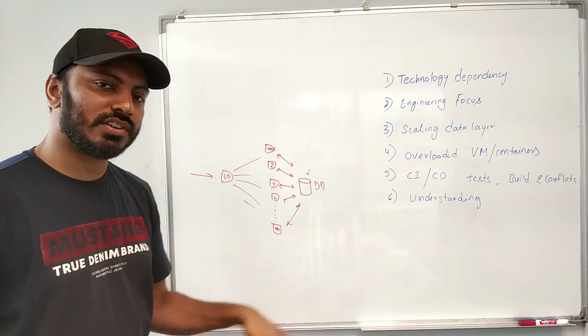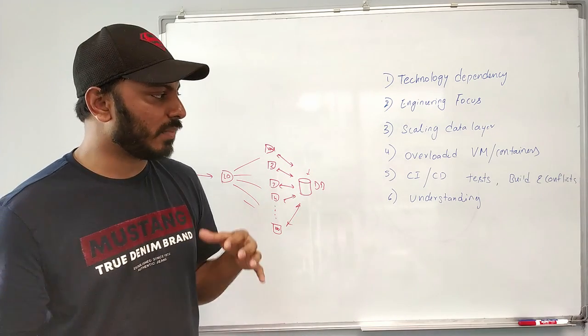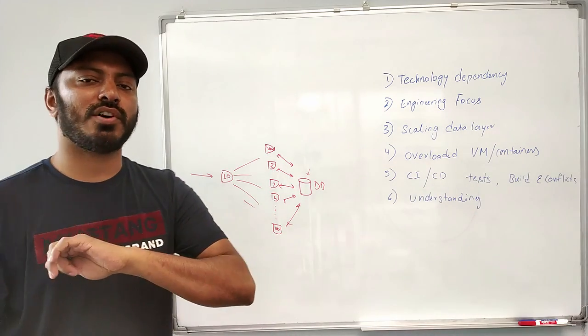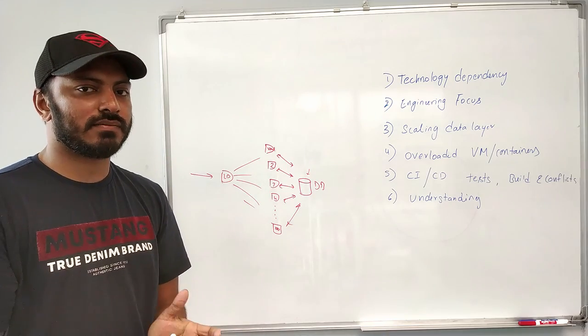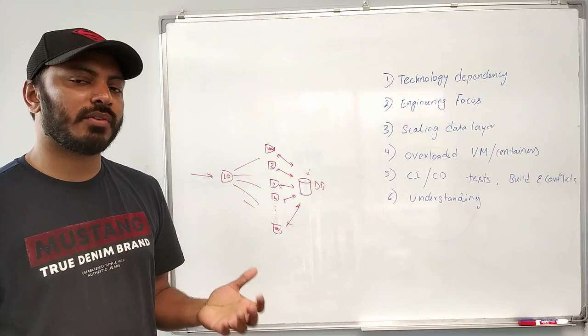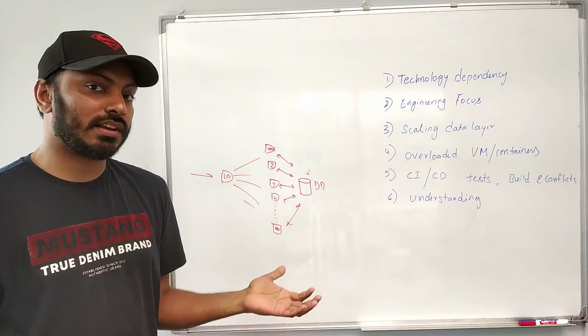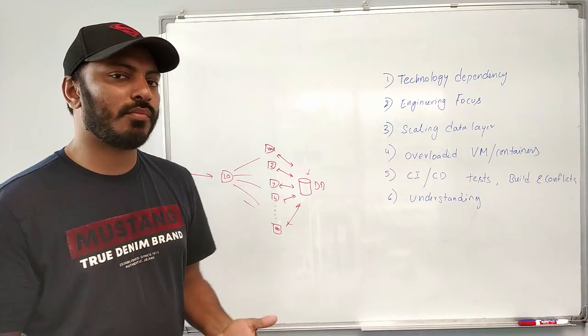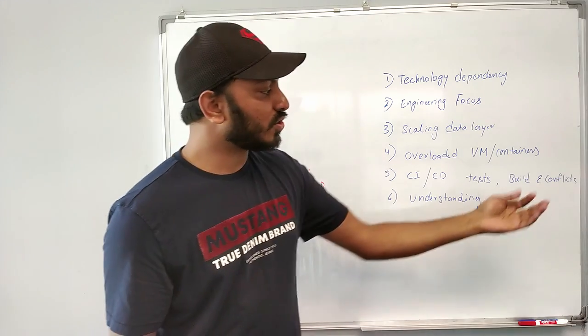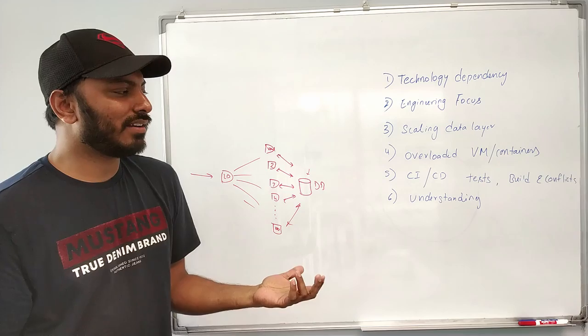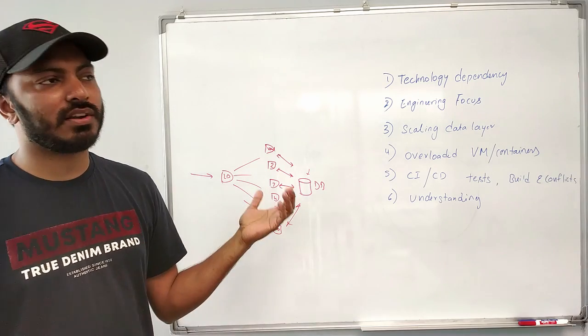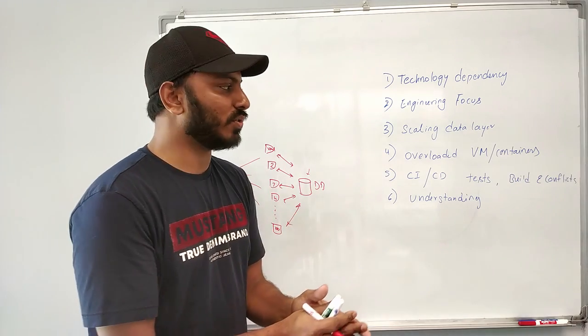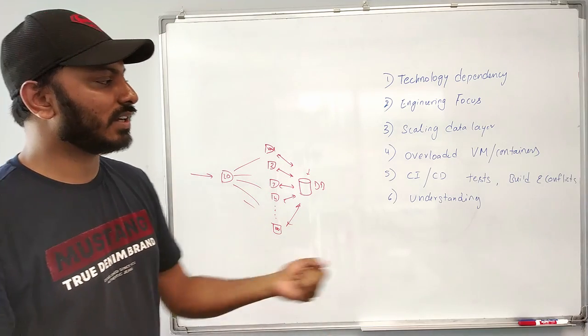So the next thing is CICD problems. When you have a continuous delivery and integration setup in your development pipeline, the tests will definitely become a pain point because you have to run all of the tests which belongs to the whole application itself. It might take many number of hours just to run the test itself because it's tightly coupled. You can't just run tests only for your module. And the next thing is build. Build might also take more time as it has to build the whole application. And also, when you're pushing the code, you might see a lot of conflicts because all of the developers in your team which are working on the e-commerce application will basically keep on pushing code into the same repository. It could be a possibility that there is a lot of conflicts.